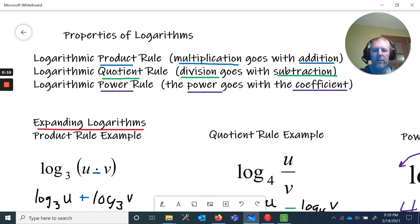Quick refresher: product rule is expanding or contracting multiplication expands to addition, addition contracts to subtraction. Quotient rule: division expands to subtraction, subtraction condenses to division. Power rule: powers expand to coefficients and coefficients condense back down to powers.